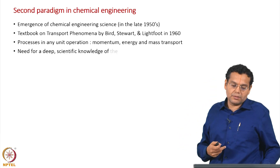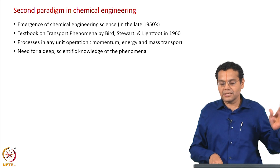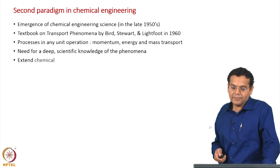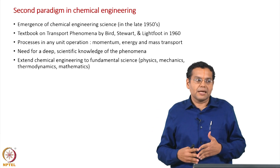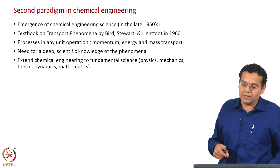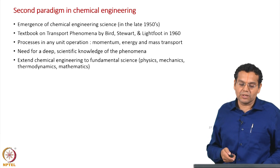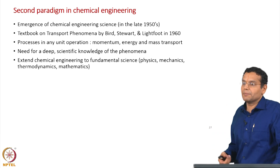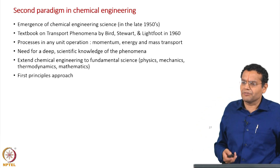What was the objective of this second paradigm? The need was for deep scientific knowledge of the phenomena. The first paradigm's need was systematization; now the need was for deep and scientific knowledge. To begin with it was more of chemical technology, which slowly became chemical engineering, and then chemical engineering science. We extended chemical engineering to fundamental sciences — physics, mechanics, thermodynamics, and mathematics. That was the big change brought by the second paradigm, and we call this a first principles approach.